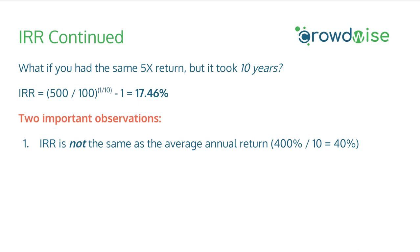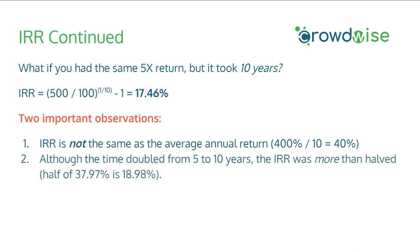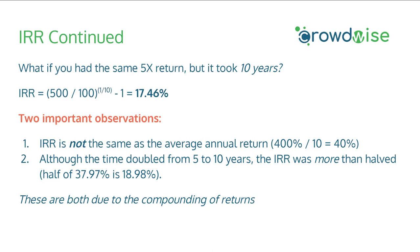The second observation is that although we doubled the time from 5 to 10 years to exit, the IRR was more than halved — half of 38% would have been 19%, but we're seeing roughly 17.5%. Both of these factors are due to the compounding of returns. Thus, it's not always easy to approximate things in your head; you should make sure you're using the right equations to get a good apples-to-apples comparison of different investment opportunities.